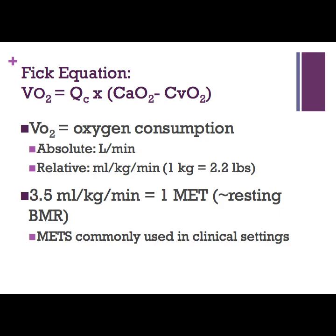Let's go back to the Fick equation. Our VO2, which is our oxygen consumption, is basically equal to our cardiac output times the difference between our oxygen content of our arteries and veins — the AVO2 difference. It's measured in absolute terms as liters per minute, or in relative terms as milliliters per kilogram per minute, which takes body size into account so we can compare across different individuals.